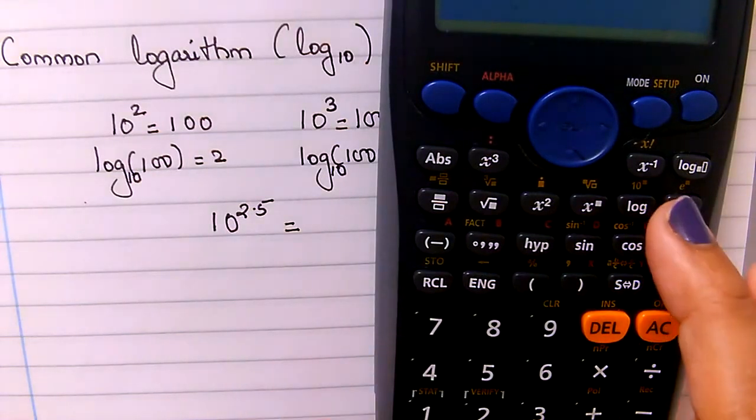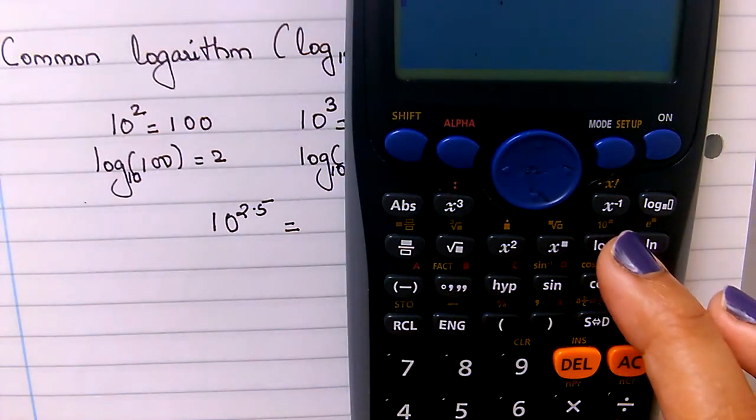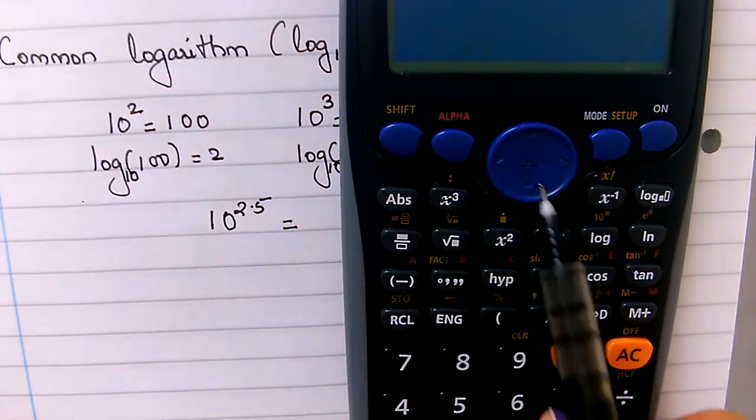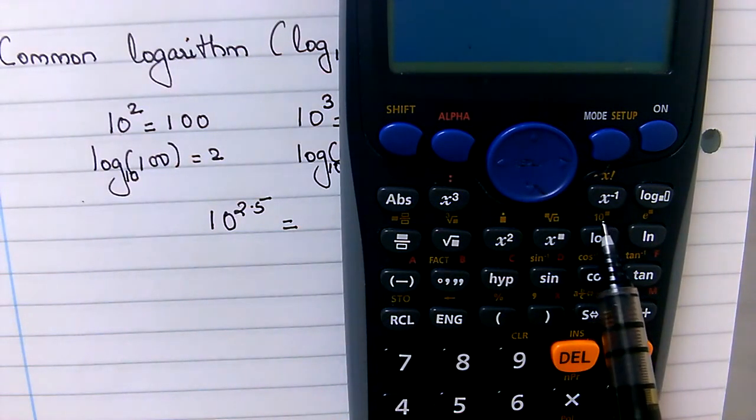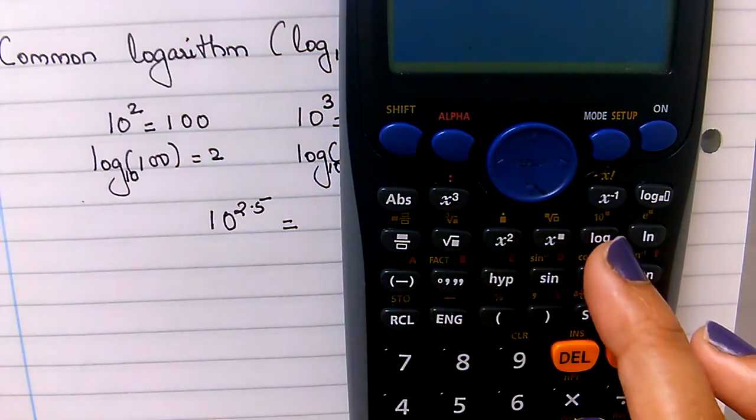So if I go, this is 10 to the power 2.5, so where do I find that? You can see above log, you can see a 10 to the power button there, and that is the second function.